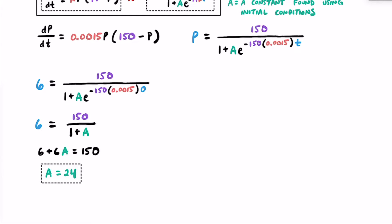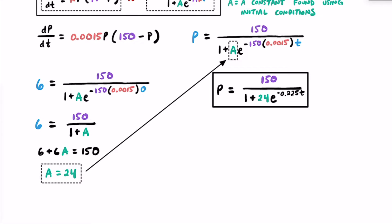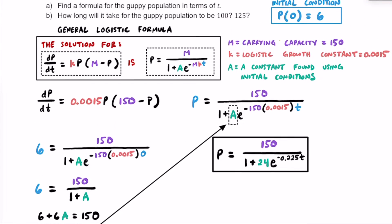A = 24 was the last piece of information we needed for our formula, so we'll plug it in now. Rewriting our formula with the known value of A: P equals 150 on top, and on the bottom we have 1 plus 24 times e raised to the power of negative 0.225t — where the exponent comes from multiplying m times k, or 150 times 0.0015, giving us 0.225. This is our complete formula for Part A, which tells us the guppy population in terms of t.